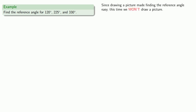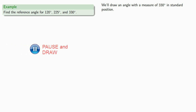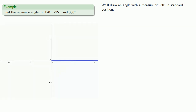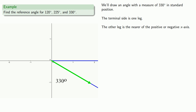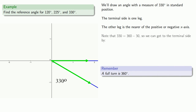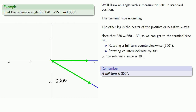For 330 degrees, we draw the angle in standard position. The terminal side is one leg, and the other leg is on the positive x-axis, which is closer this time. Since 330 is 360 minus 30, we rotate a full turn counterclockwise and then rotate clockwise by 30 degrees, so the reference angle is 30 degrees.